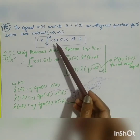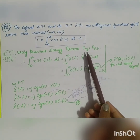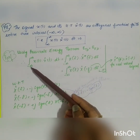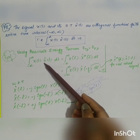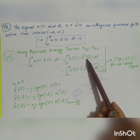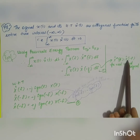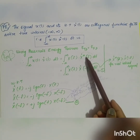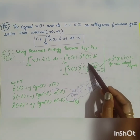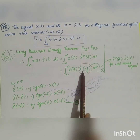To prove this orthogonality theorem, we start with Parseval's energy theorem, which states that the signal energy in the time domain equals the energy in the frequency domain. We can write: the integral from −∞ to ∞ of x(t)·x̂(t) dt equals, in the frequency domain, the integral from −∞ to ∞ of X(f)·X̂*(f) df, where * denotes complex conjugate. For a real-valued signal, the complex conjugate X̂*(f) equals X̂(−f). We take this as equation 1, and the next step is to find the value of X̂(−f) and substitute it into this equation.